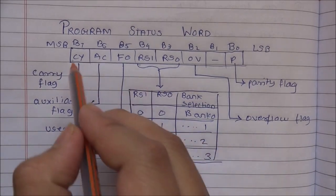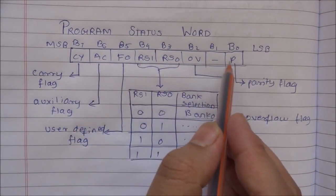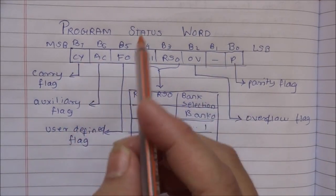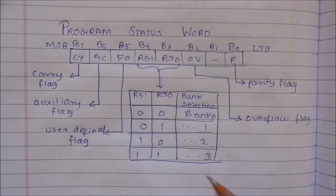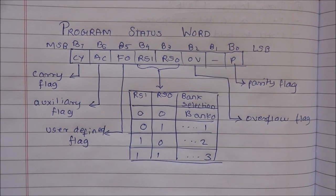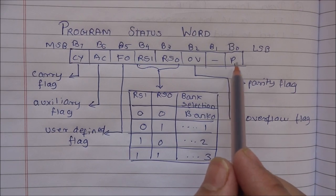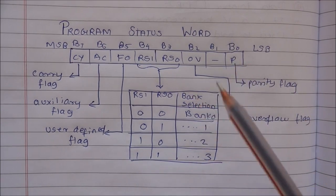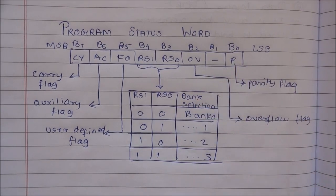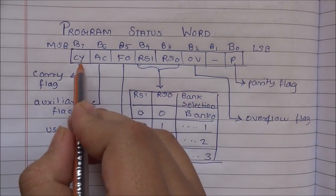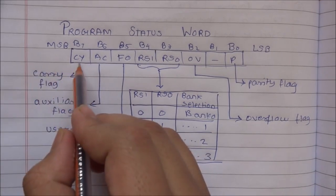There are eight flags in the Program Status Word and it is 8 bits wide. A flag is a flip-flop that indicates some condition produced by the execution of an instruction. For example, if the carry flag is set then...